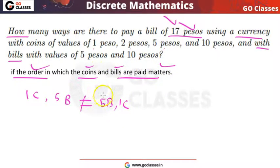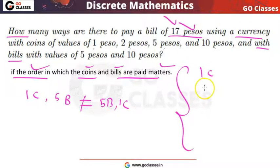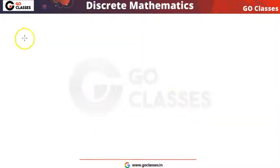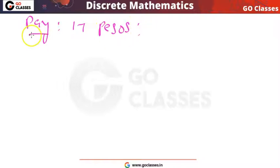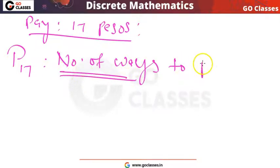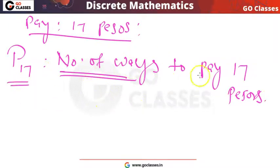So we want to pay 17 pesos — how many ways do we have? Let's call it P17. The currency I have is: 1 peso coin, 2 peso coin, 5 peso coin, and 10 peso coin. And I also have bills: 5 peso bill and 10 peso bill. P17 means the number of ways to pay 17 pesos.